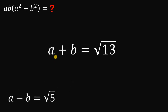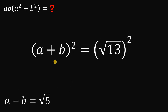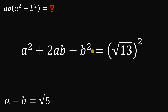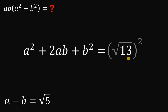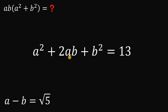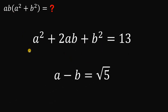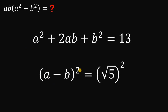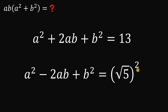Let's focus on the first equation and square both sides. We get a squared plus 2ab plus b squared equals 13. We also square the second equation: a minus b squared expands to a squared minus 2ab plus b squared, and square root of 5 squared is just 5.